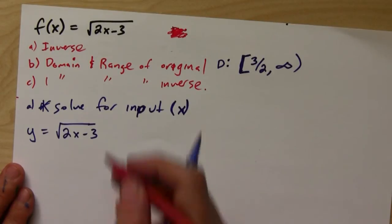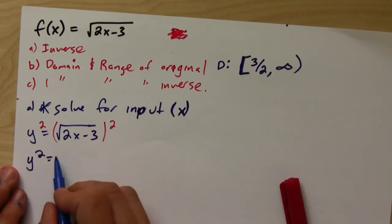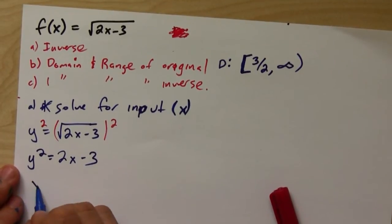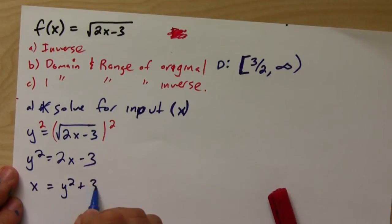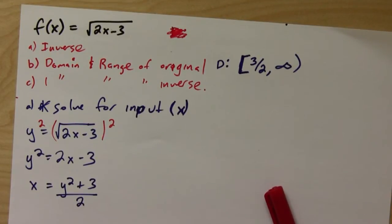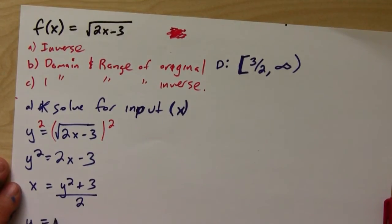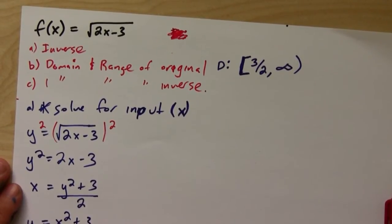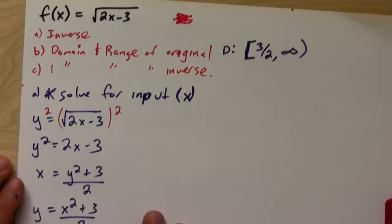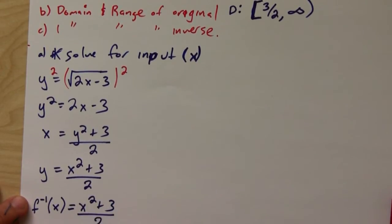All we're doing is solving for X. To get rid of the square root, we square both sides: Y squared equals 2X minus 3. Then we solve for X: X equals (Y squared plus 3) over 2. Then we switch the variables — change X's to Y's and Y's to X's. This is going to be the inverse function, and we change the notation to F inverse of X equals (X squared plus 3) over 2.